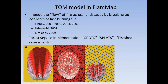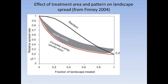The Forest Service implemented this both conceptually and mechanically using Mark's TOM program and FLAMMAP as part of the SPOTS, SPLATS, and fireshed assessment program. Two ignitions unimpeded through a uniform landscape create a very large perimeter. Random field treatments do little to impede fire growth, but regular designs and patterns of treatments — both their arrangement and dimensions — can have a dramatic effect on fire spread rate.